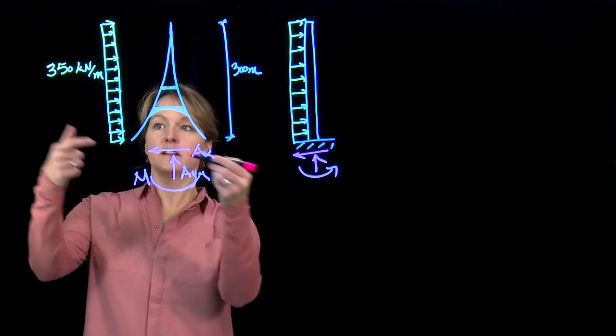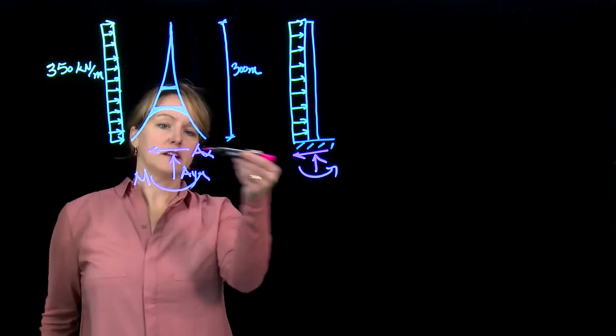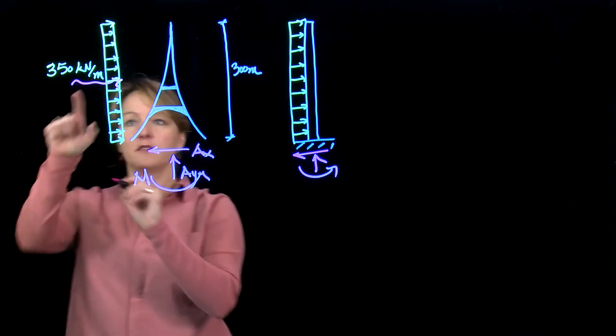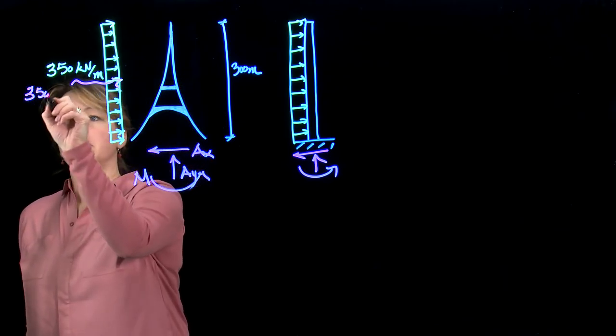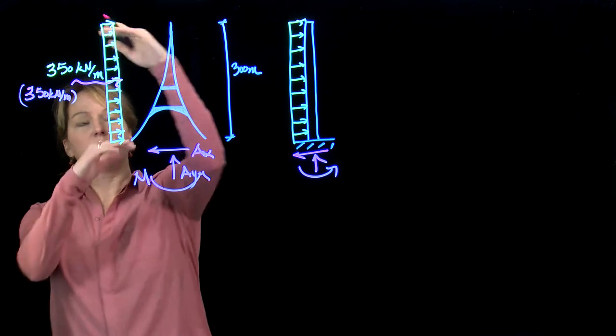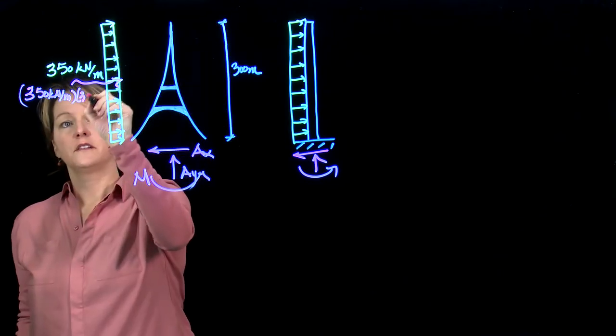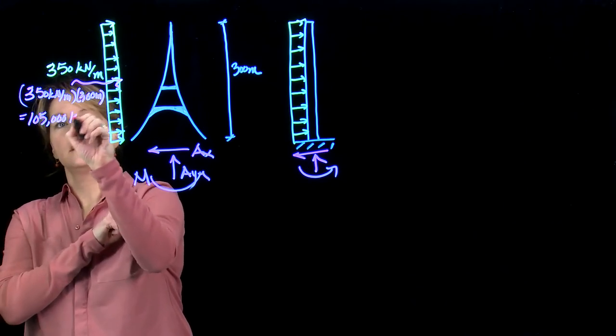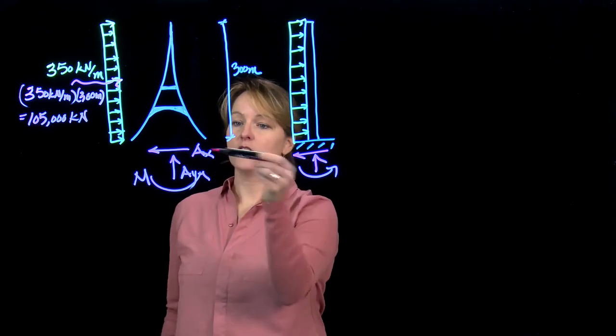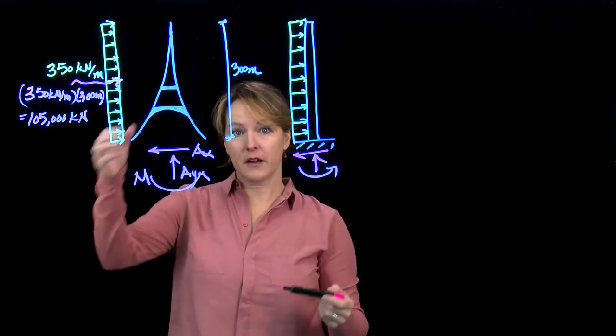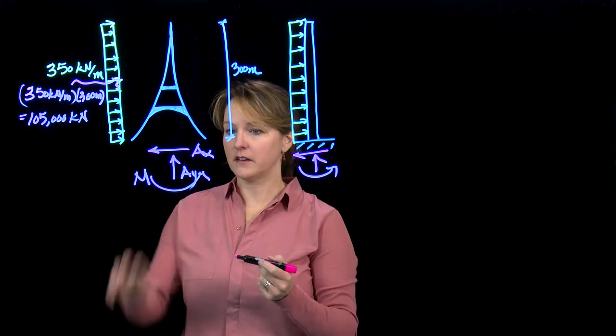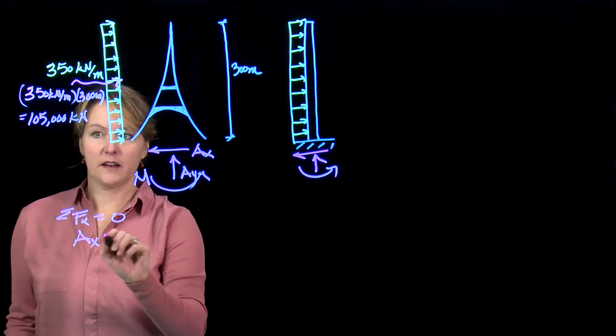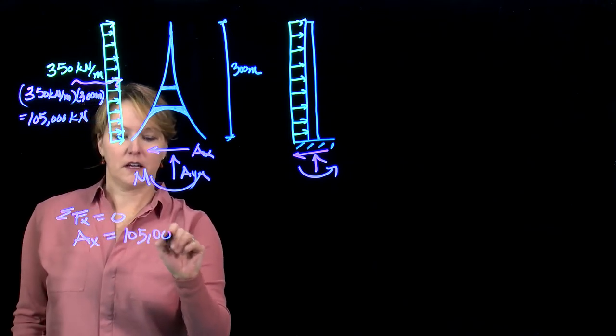So the first thing, we can look at this. Summing forces horizontally, we have the wind load acting this way and the AX acting the opposite direction. The total wind load that we have acting is going to be 350 kilonewtons per meter acting over the whole height, which is 300 meters. That quantity is a large number, 105,000 kilonewtons. And that's going to need to be reacted along the base. So we don't want it to slide across the ground. We need some connections there to resist that.